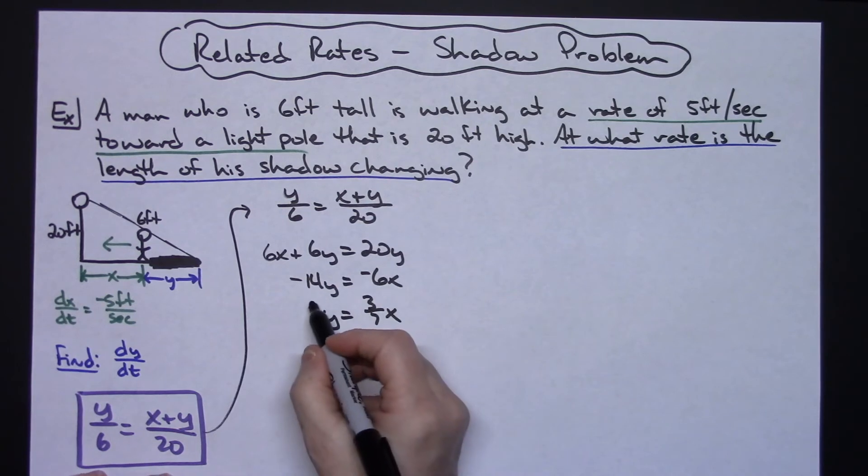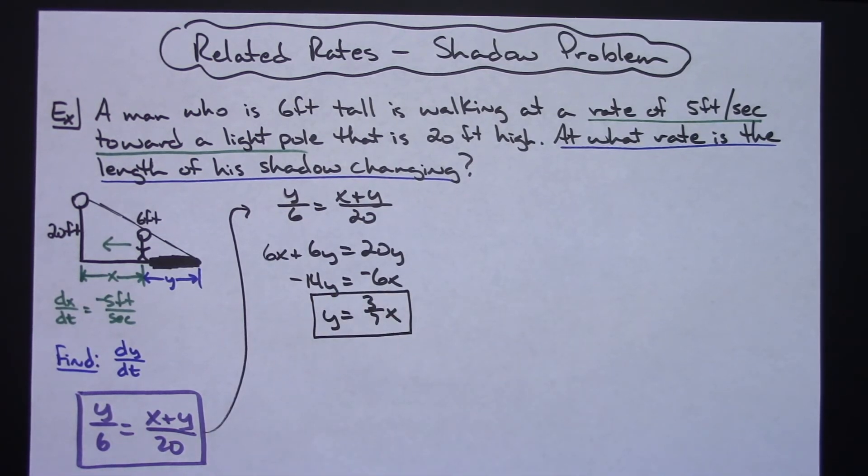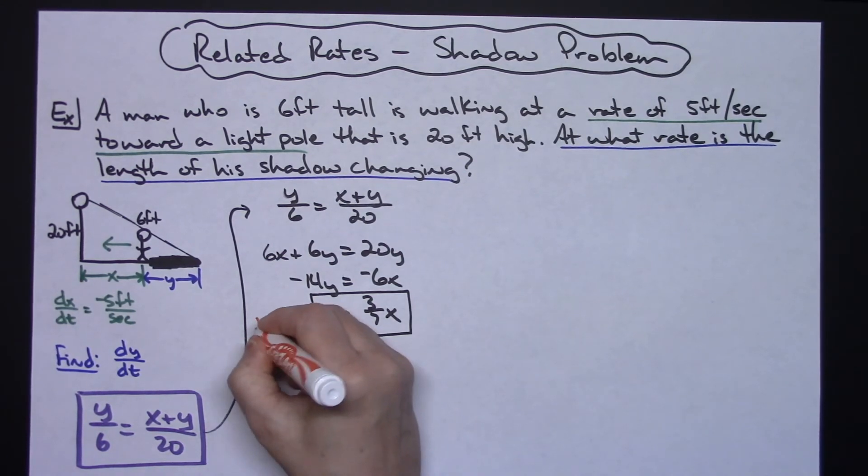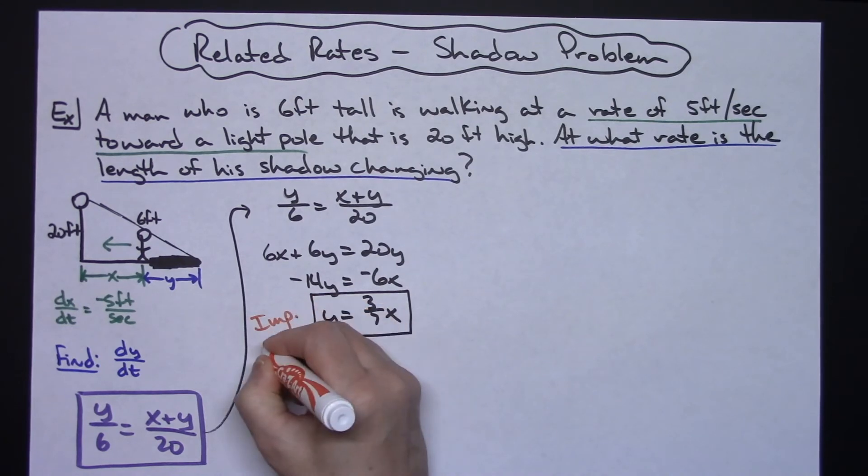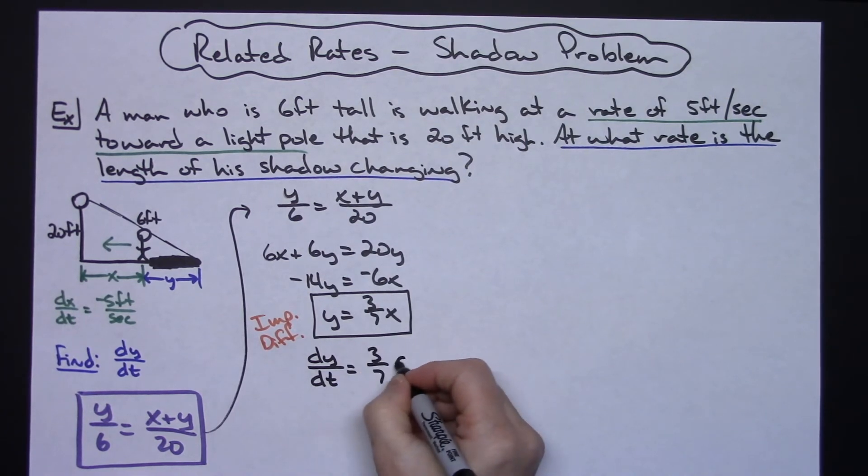Now that I have solved that proportion for y, I am now ready to implicitly differentiate my equation. So that's what I'm going to do at this point—implicit differentiation. We're going to do this with respect to time, so this will be dy/dt is equal to 3/7 dx/dt.